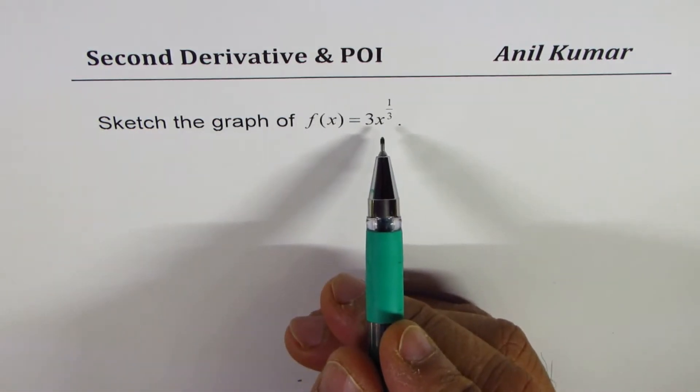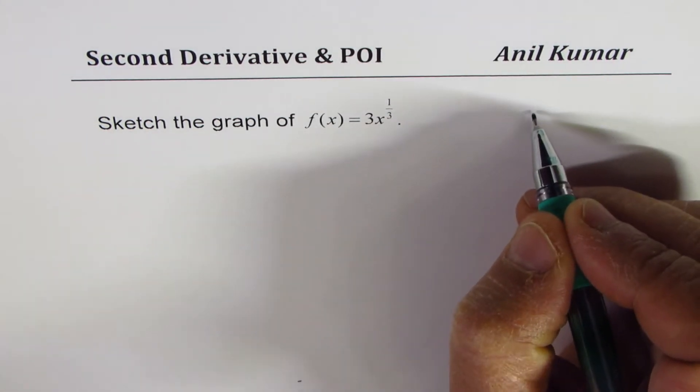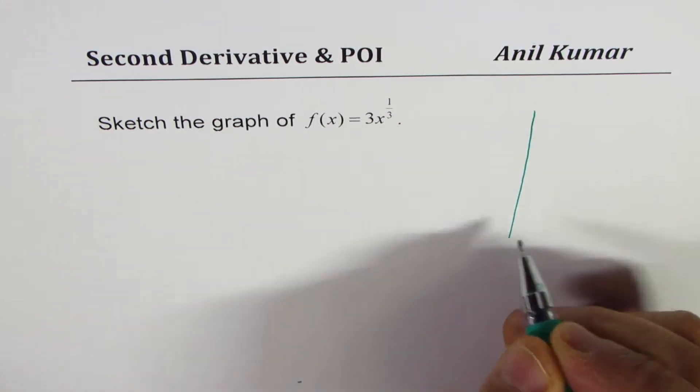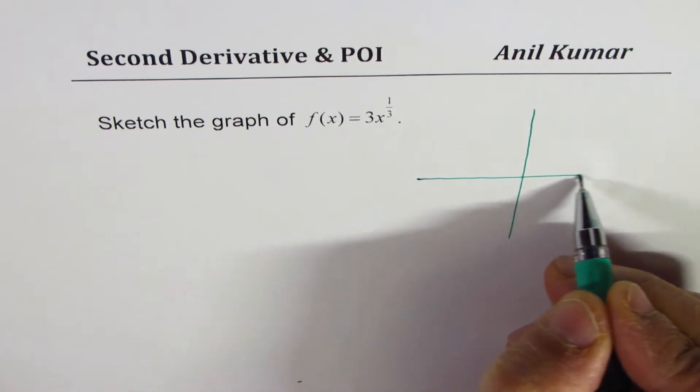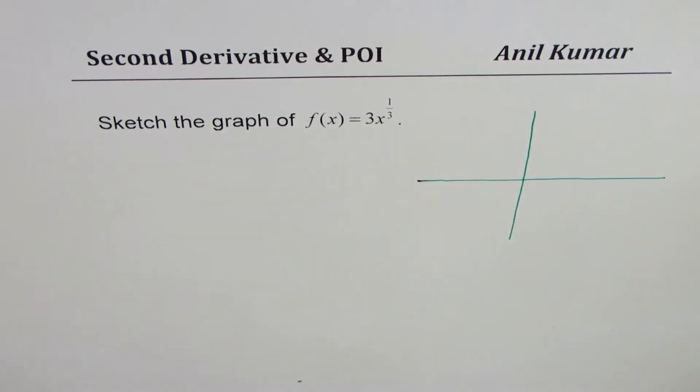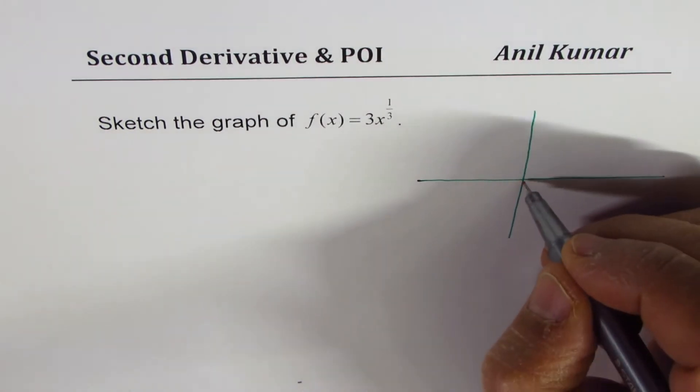So it's basically a cube root function whose graph we have to sketch. As you know, the cube root function graph, most of you will know how it looks like. In general, this graph will be kind of like this.